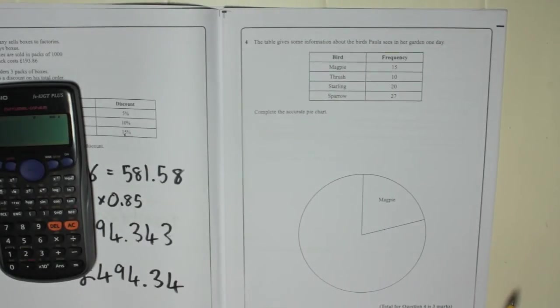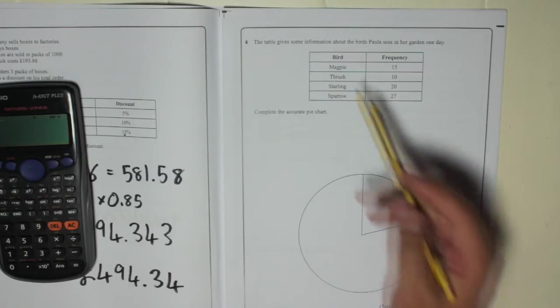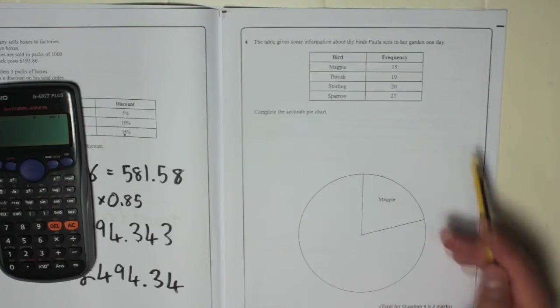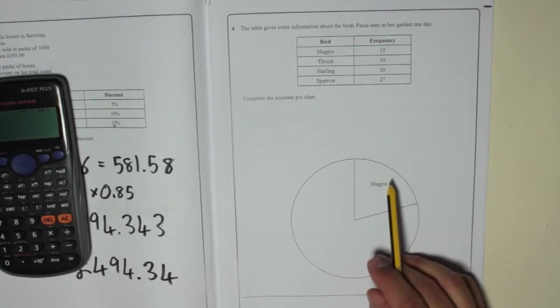Question four, the table gives some information about the birds Polly sees in her garden one day. Birds: magpie, thrush, starling, sparrow and the frequency for each one. Complete the accurate pie chart. Magpie's already done.